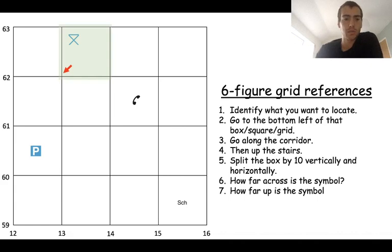Two, we go to the bottom left corner. Three, along the corridor, we get 13. Four, up the stairs, we get 62. Then that's our four figure grid reference done.